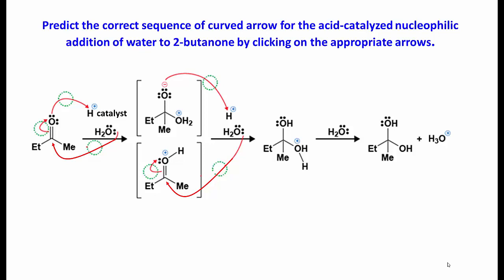The first step will be protonation of the carbonyl group. The weakly basic electrons on the carbonyl oxygen will be protonated by a strong acid. Electrons flow from the base to the acid.